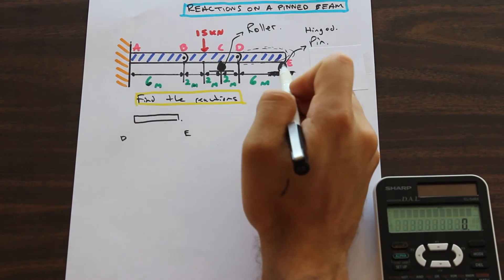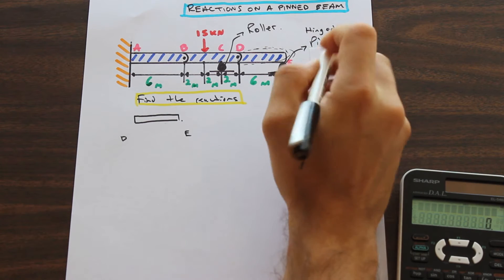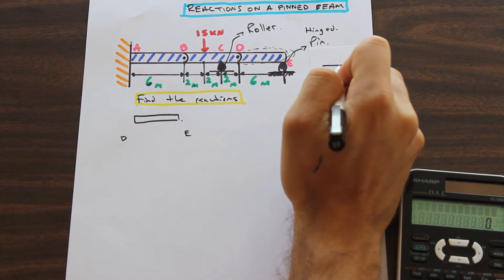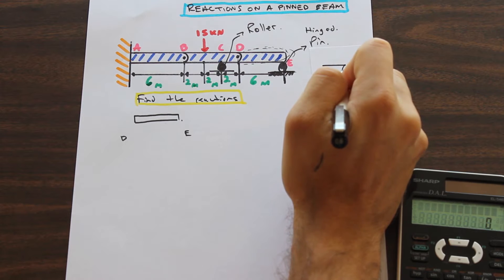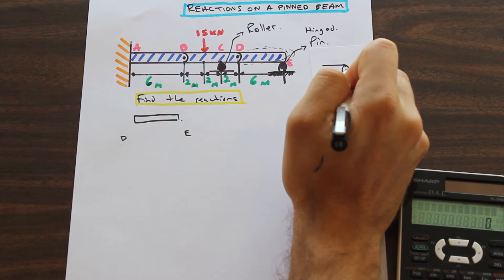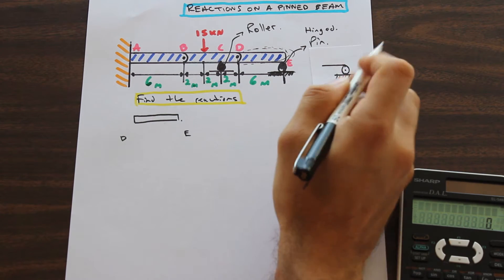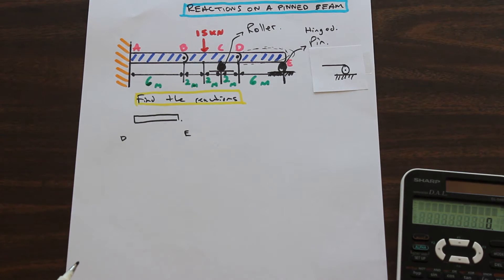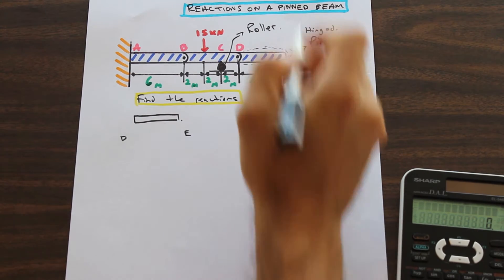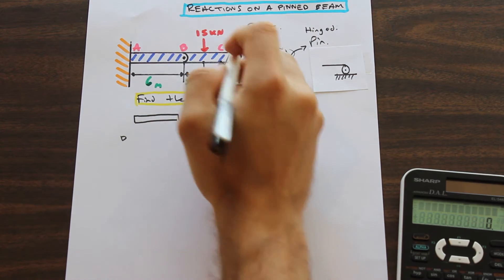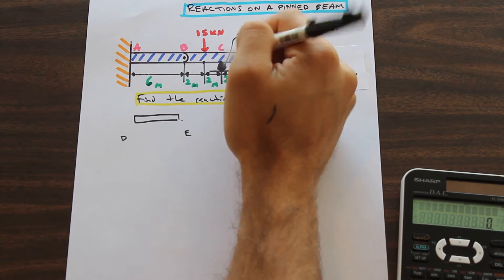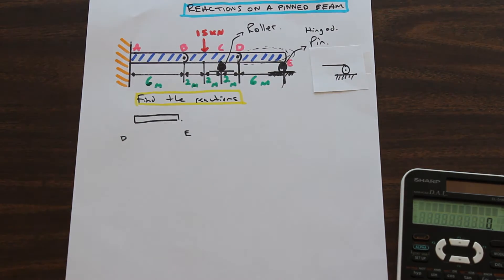So what we have here is a hinged pin system. There's a little roller with a pin on the surface, so it's allowed to rock in the X direction but not in the Y direction. This only has a reaction in the Y axis. Same with the roller — only in the Y axis. And if it wasn't like that, we actually wouldn't be able to solve this question, so keep that in mind.